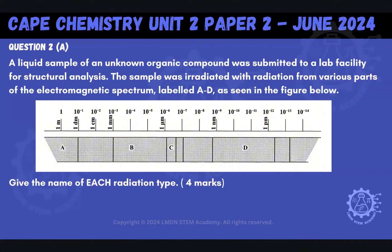Question 2a says that a liquid sample of an unknown organic compound was submitted to a lab facility for structural analysis. The sample was irradiated with radiation from various parts of the electromagnetic spectrum labeled A through D as seen in the figure below. Give the name of each radiation type.